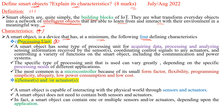The first characteristic is the processing unit. A smart object has some type of processing unit for acquiring data, processing and analyzing sensing information received from sensors, coordinating control signals to actuators, and controlling a variety of functions including communication and power systems. The type of processing unit varies depending on application. A commonly used processing unit is the microcontroller, with advantages including small form factor, flexibility, programming simplicity, ubiquity, low power consumption, and low cost.